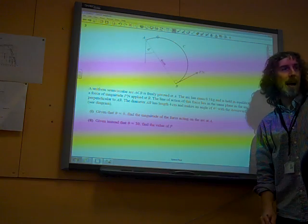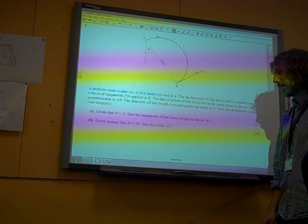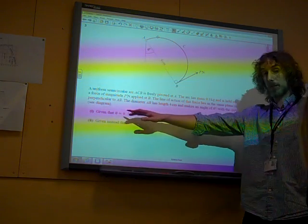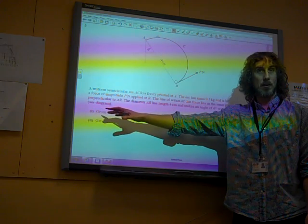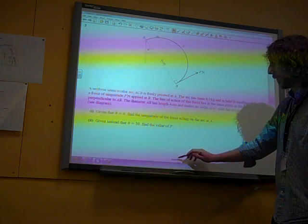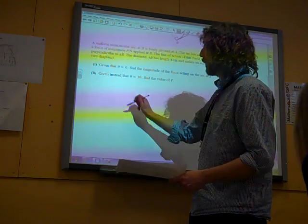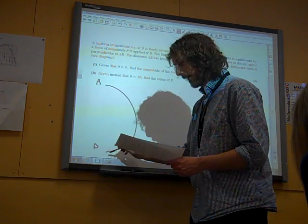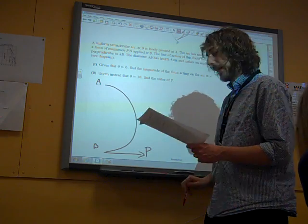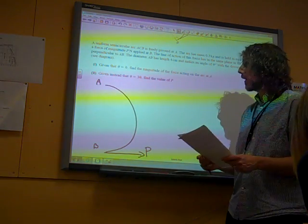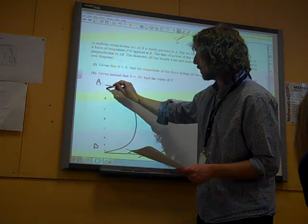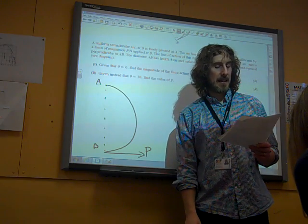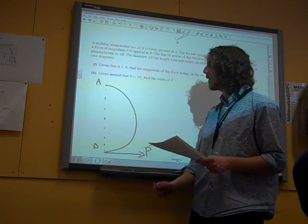Part 1. Given that theta is 0, find the magnitude of the force acting on the arc at A. Bearing in mind that this throwaway line has quite radically changed what's going on with our question, I think we need a new diagram. So we're going to draw our arc. Not bad. There's A, there's B. Here is P newtons, our force there. Here is this line, which is the diameter. And we need to consider what's going on here.